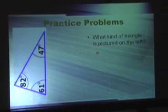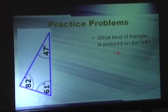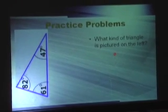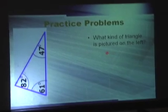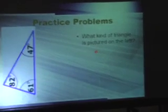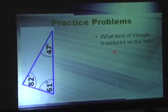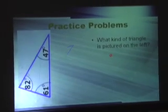Here's the practice problem: what kind of triangle is shown on the left? Acute. That is right, why? Because it's less than 90 degrees. Correct.